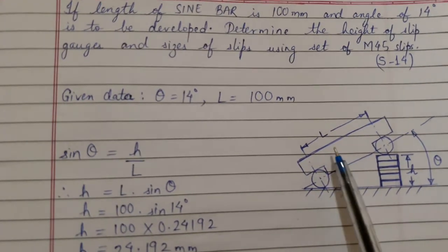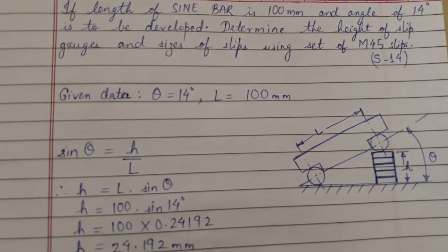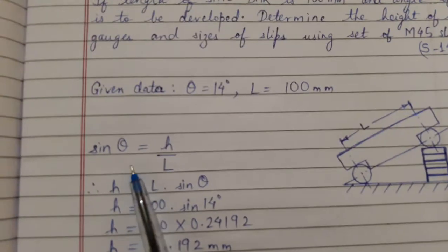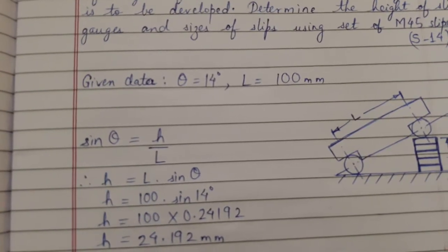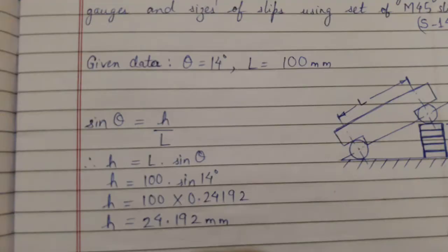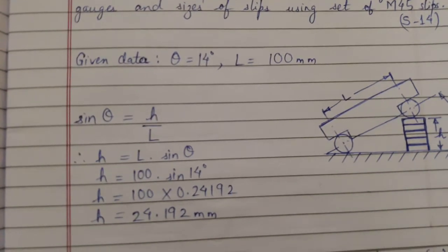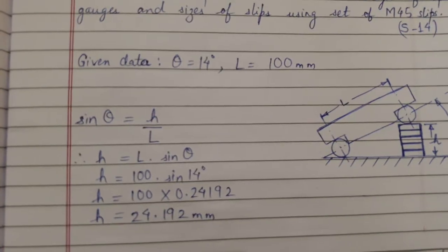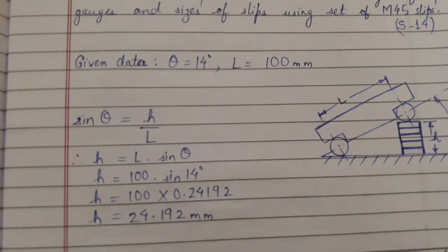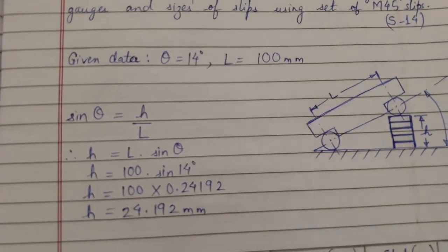We can use the formula sin θ = H/L. From here we can get this small h, and then we can use the M45 slip set to develop 24.192 mm. Let us see how it is done.